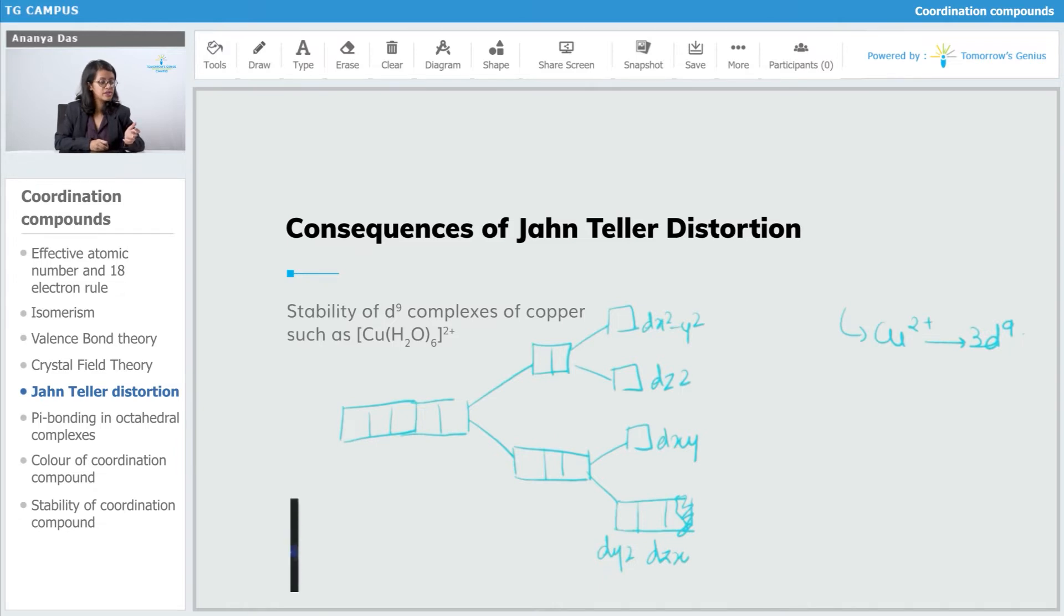Now, how does it provide stability? Let's fill in the electrons. So, 1 2 3 4 5 6 7 8 9. Eg is unsymmetrically filled, so high distortion.